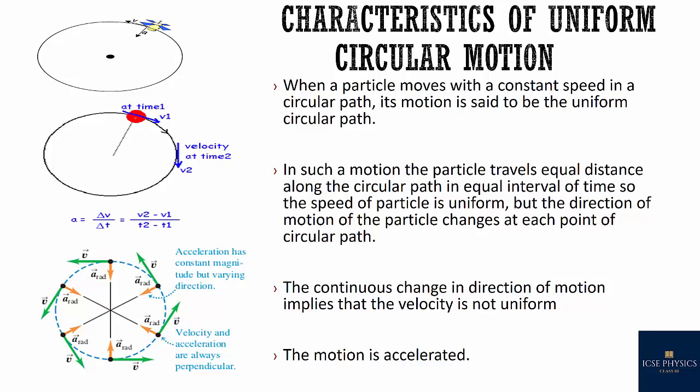But the direction of motion of the particle changes at each point of the circular path. Looking at the diagram with north, south, east, west: at one particular point the velocity is pointing east; at another point it is pointing south; and at another point it is pointing west.